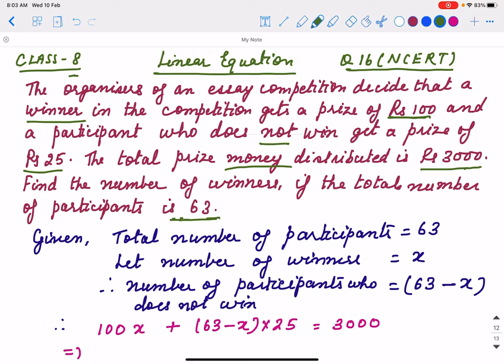Total number of participants is 63. So we go from the back side to the last sentence. Total number of participants is 63. Out of this, some will win, some will not win. Some are winners, some will not win. Winners will get a prize of Rs. 100. And those who don't win, they will get Rs. 25. And this way we have to find out how many winners are there. So number of winners you have to find out.